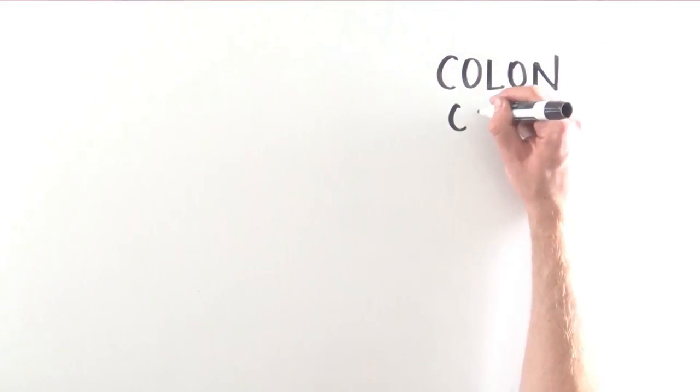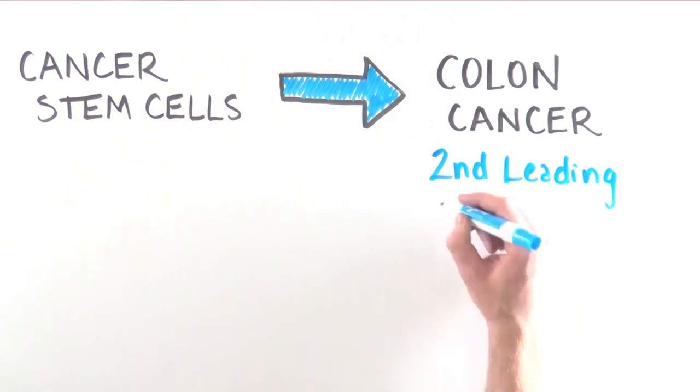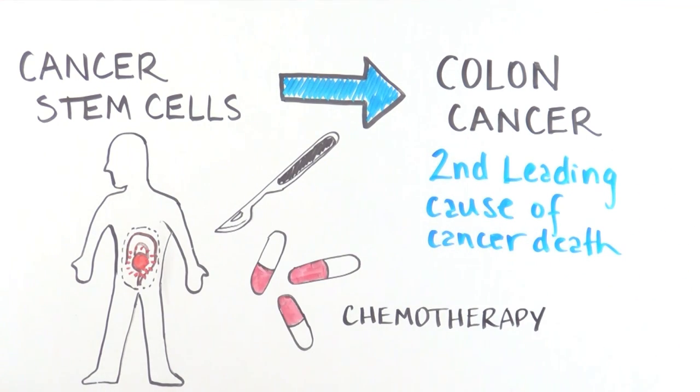Colon cancer is a type of cancer that is thought to arise from cells that resemble stem cells. It is the second leading cause of cancer deaths and is currently treated with surgery and chemotherapy.